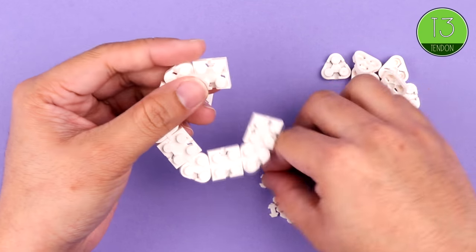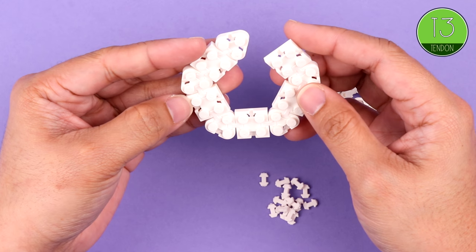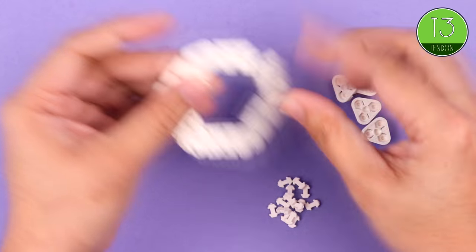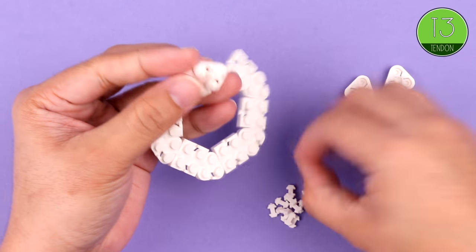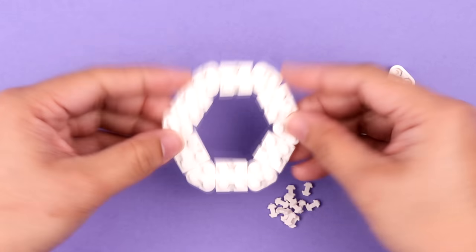Square, then triangle, square, triangle again, all the while just using our T3 tendons. Until we can join them together now. And there's our ring.